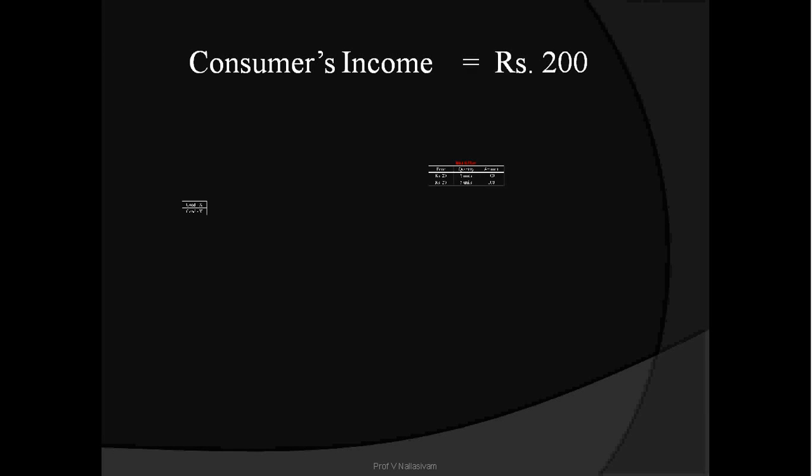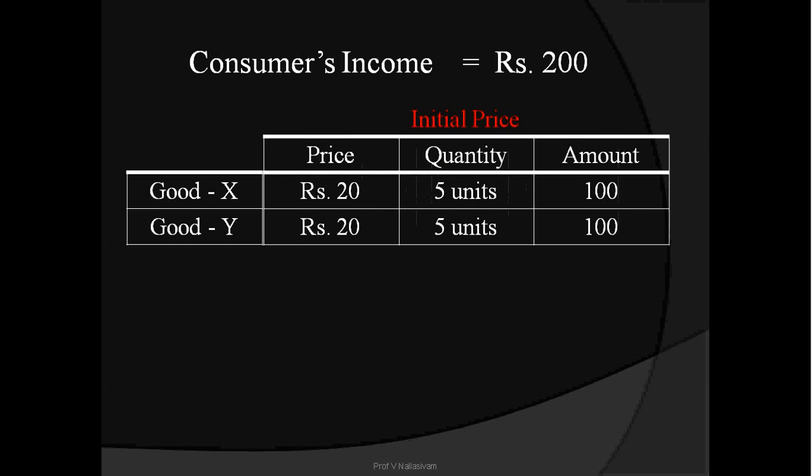The consumer's income in this case is 200 rupees. Look at the initial price table. According to this table, the consumer is consuming two goods — good X and good Y. At 20 rupees price he buys 5 units of good X, and at 20 rupees price he buys 5 units of good Y. This is his initial position.